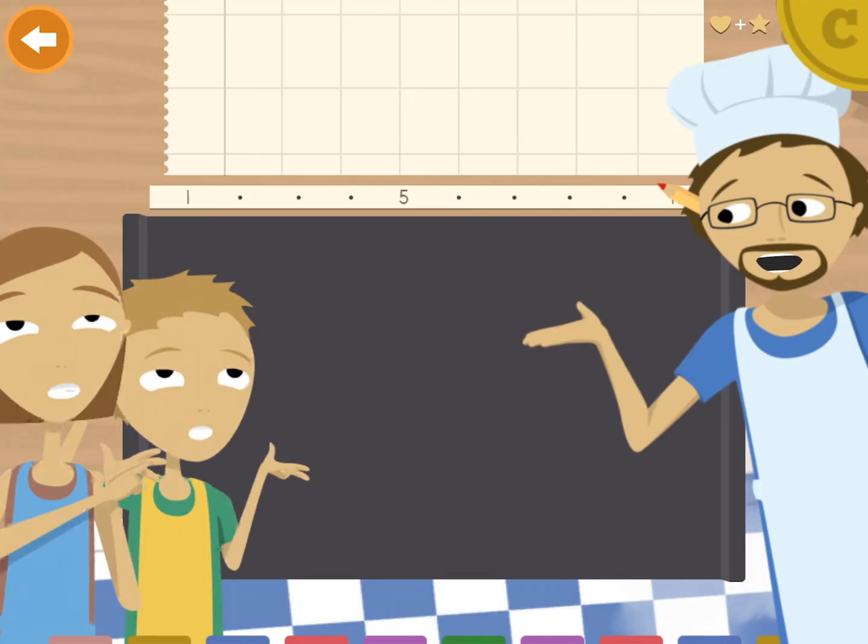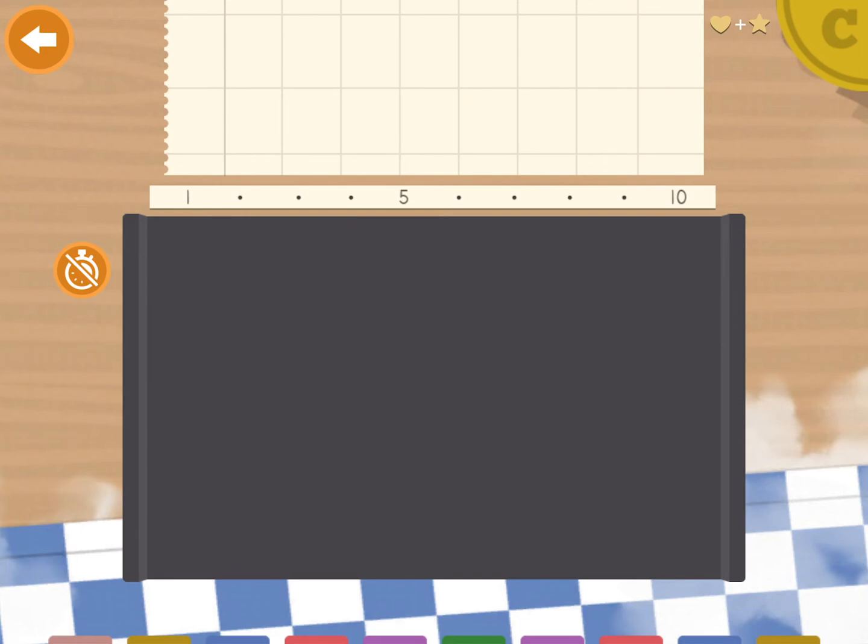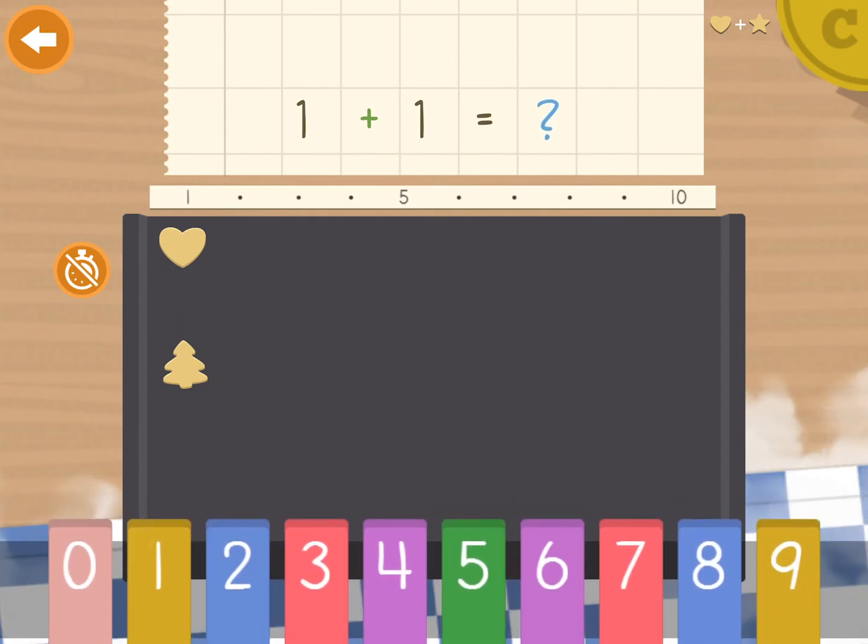Let's start with something you might think is simple. 1 plus 1. Now let's say that the lower cookie is yours and the upper one is mine. And you give me your cookie. So how many cookies do I have now? That's right, 2.